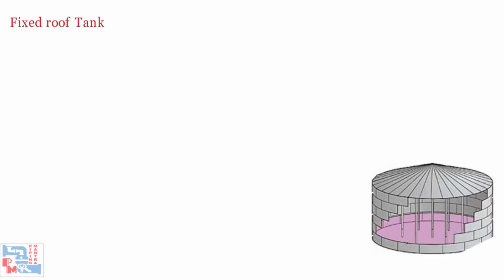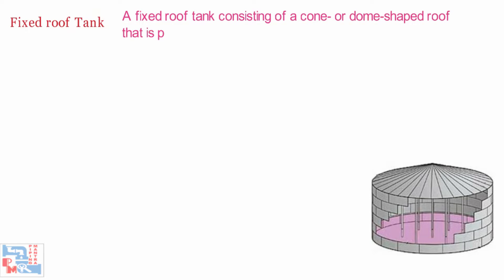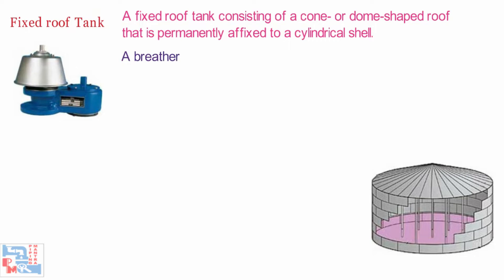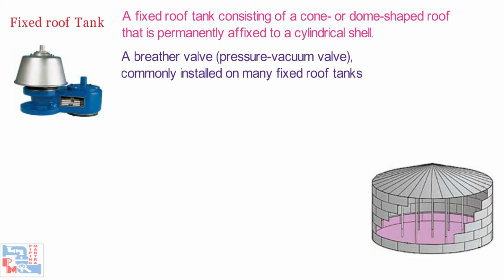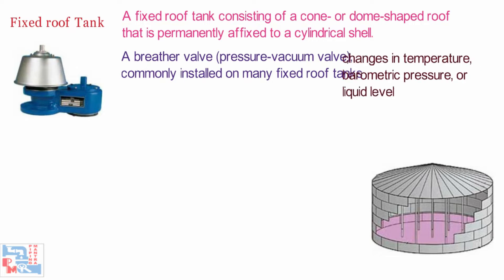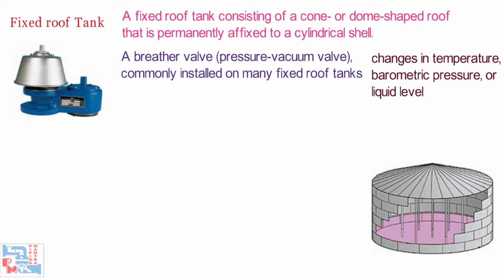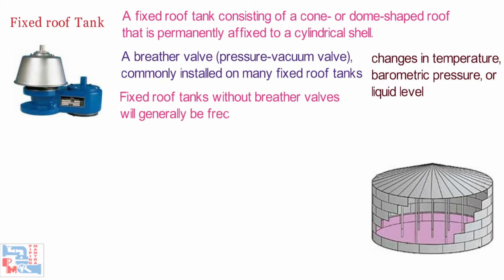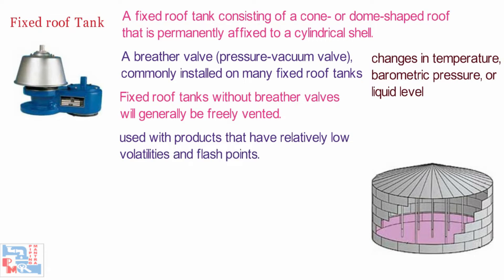Next is the Fixed Roof Tank — a fixed roof tank consisting of a cone or dome-shaped roof that is permanently affixed to a cylindrical shell. A breather valve, that is a pressure-vacuum valve, commonly installed on many fixed roof tanks, prevents the release of vapors during very small changes in temperature, barometric pressure, or liquid level. Fixed roof tanks without breather valves will generally be freely vented. Fixed roof tanks are typically used with products that have relatively low volatilities and flashpoints.